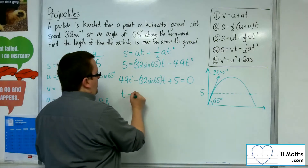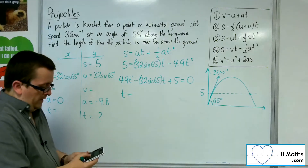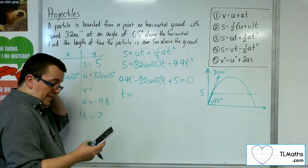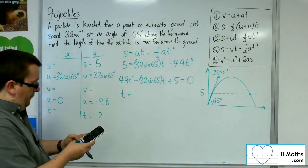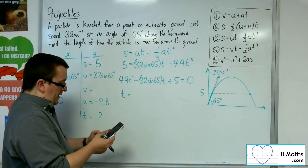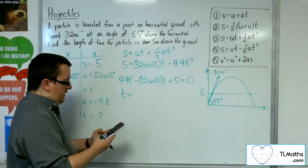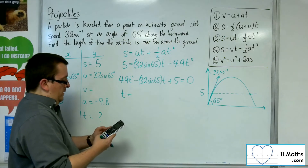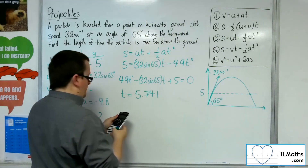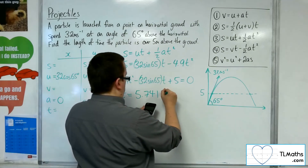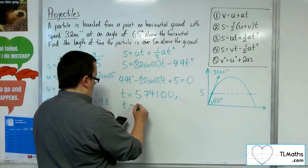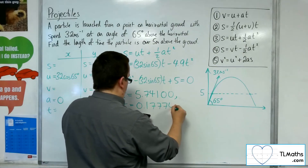What I want to do is pop this into my quadratic solver on my calculator — menu A, then polynomial, degree 2. We've got 4.9, then minus 32 times sine of 65 degrees, and then 5. This gives me times of 5.74100 and T equals 0.17774.